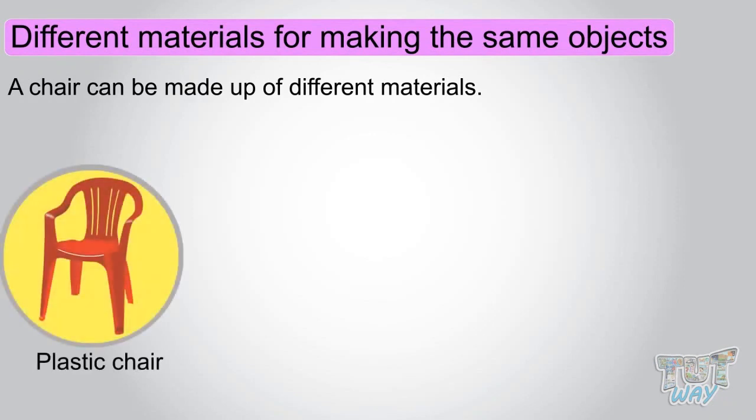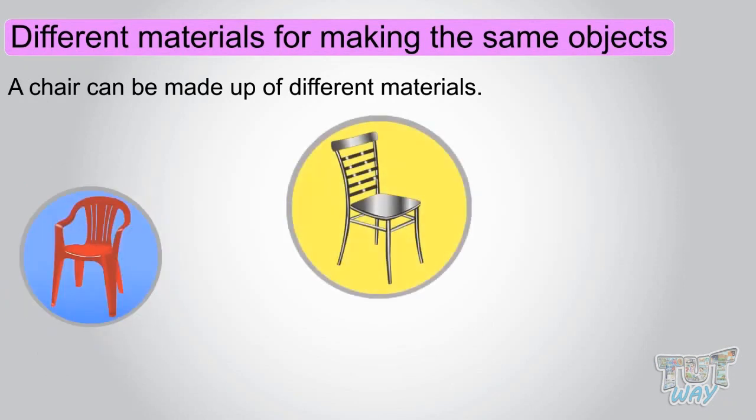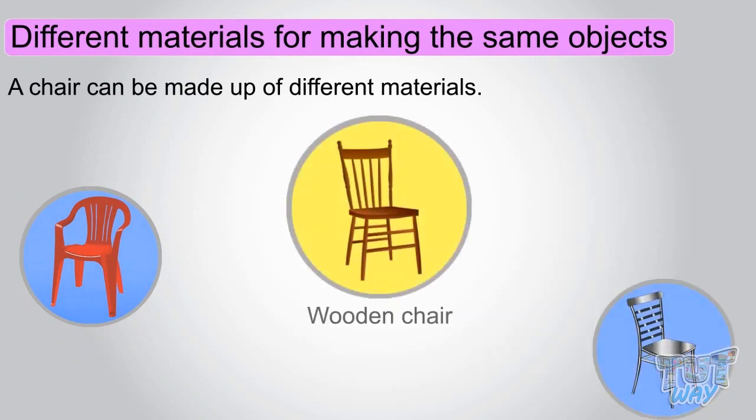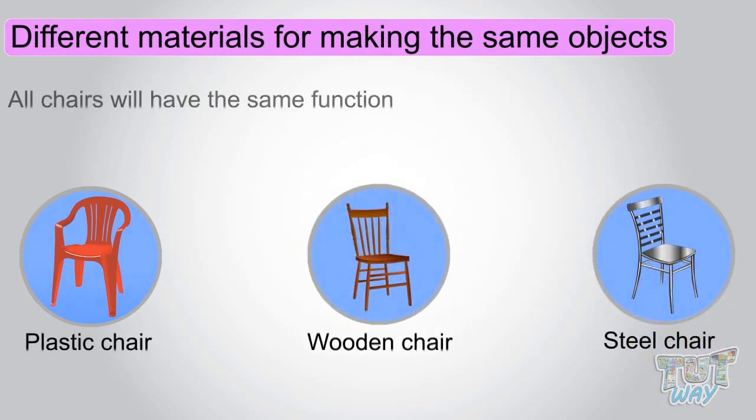This is a chair which is made up of plastic. This is a chair which is made up of steel. Whereas this is a chair which is made up of wood. All chairs will have same function of providing seat. But their properties will be different.